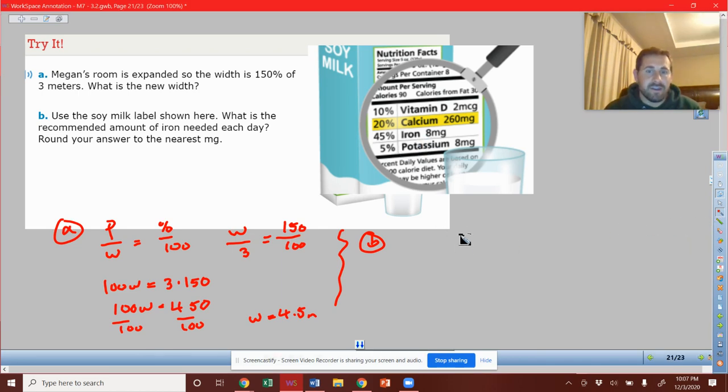So we're looking at the iron. So our part over the whole equals percent over 100. So the percentage that we're told when we consume here is 45%. So 45 of 100. So that's just part of it. We're not consuming the whole amount that is recommended for the day just with this product. So we're just consuming 8, which is the part we need to figure out the whole.